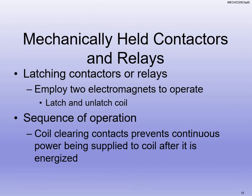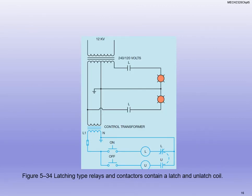We can have mechanically held contactors — we can latch them using electromagnetics with latch and unlatch coils. Latch means a kind of memory place — we talked about SR latches in electronics. We use latches for memory, holding something in place until we release the power or after power has been released for a certain amount of time. We can also use sequencing operation, which allows for continuous power to be supplied to the coil after it's energized — similar to the seal-in logic we did in PLC class. A latching relay has latch and unlatch with opposite contactors: one normally closed and one normally open.